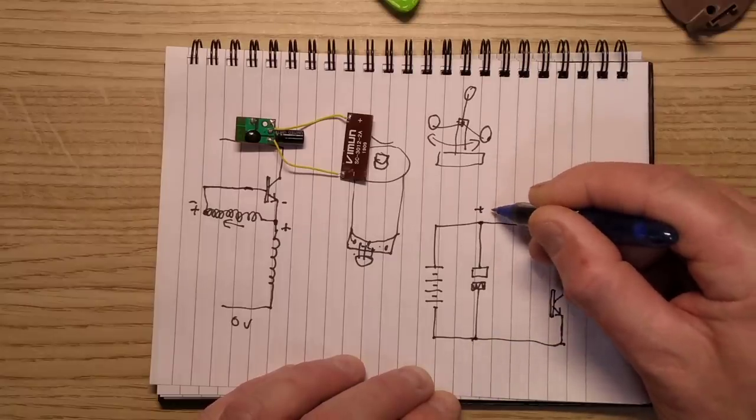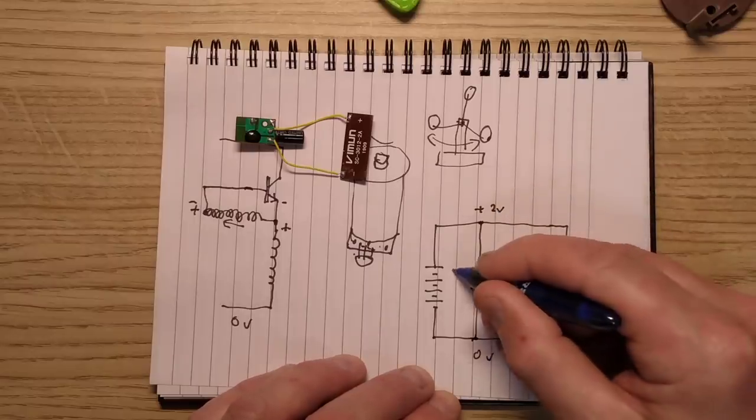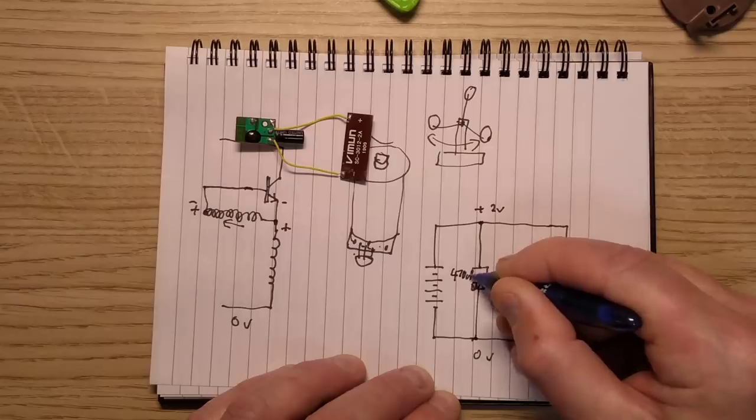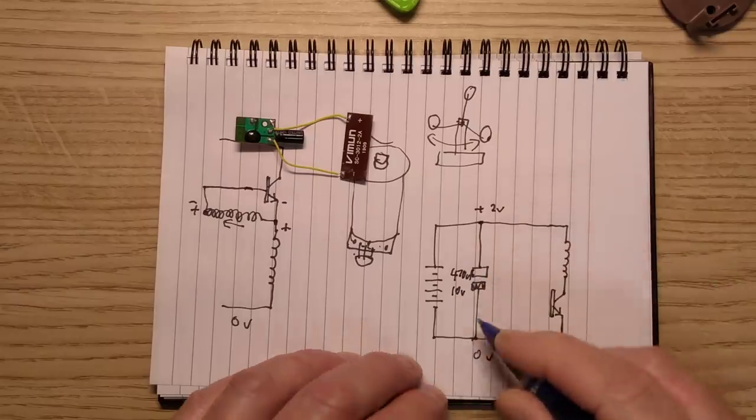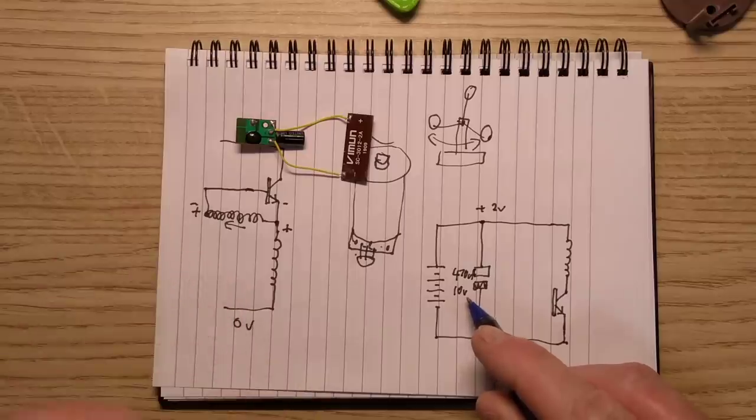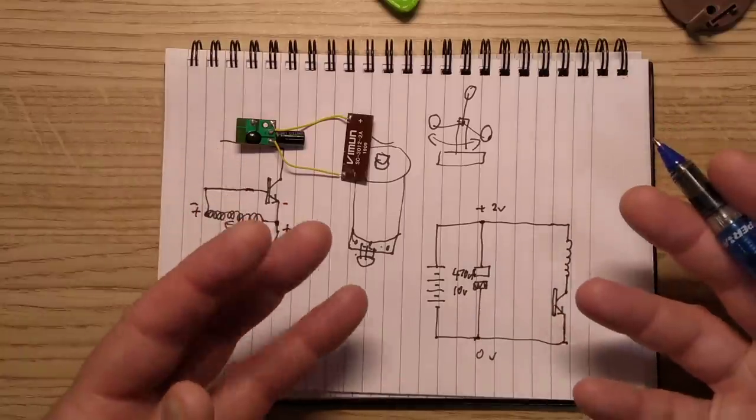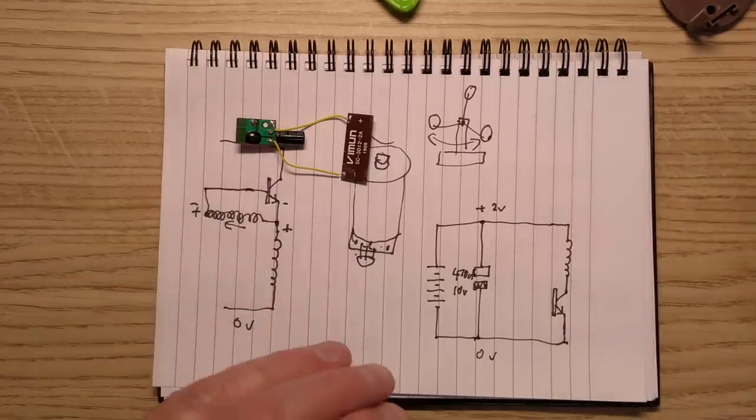Which effectively, this is going to be plus, say, two volts. That's going to be zero volts. 470 microfarad, 10 volt. The 10 volt rating is purely because that's probably the lowest they could get in that style of capacitor. It's just an ordinary one. It's not a low ESR capacitor. It's just a very, very ordinary capacitor.